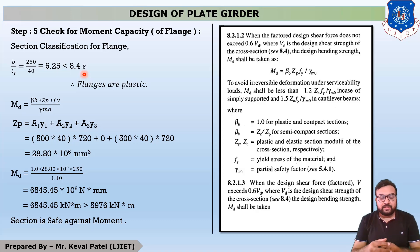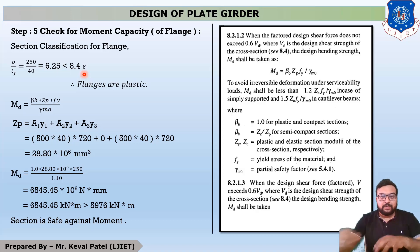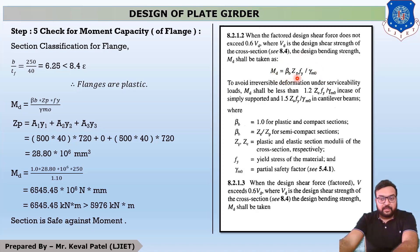Now let us start step number 5, check for moment capacity. Move to page number 53, clause 8.2.1.2, where the equation is Md = βB × ZB × Fy / γM0. The value of βB is equal to 1 because our selected section is in the plastic state — βB is 1 for plastic and compact sections.